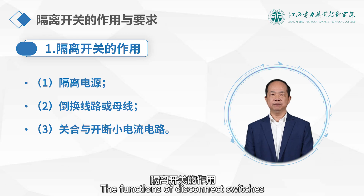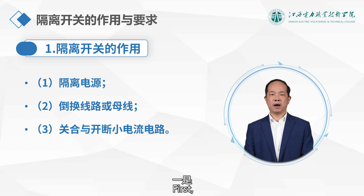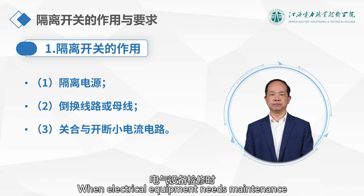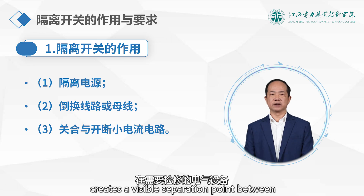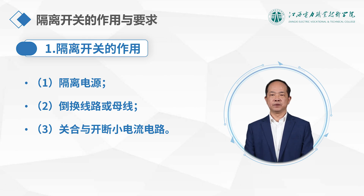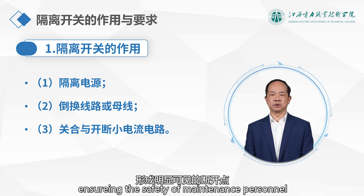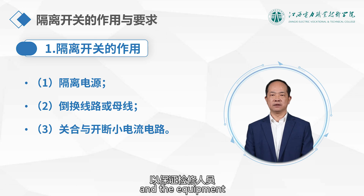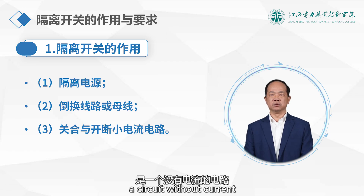The functions of disconnect switches can be summarized in three main aspects. First, to isolate the power supply. When electrical equipment needs maintenance, the disconnect switch creates a visible separation point between the equipment to be maintained and the live power source, ensuring the safety of maintenance personnel and equipment. It opens a circuit without current.